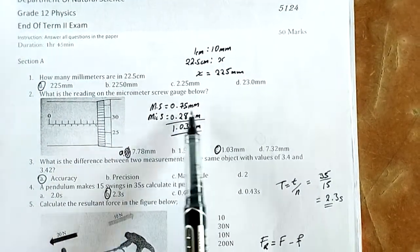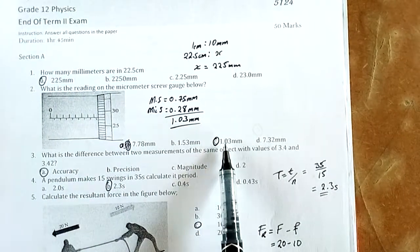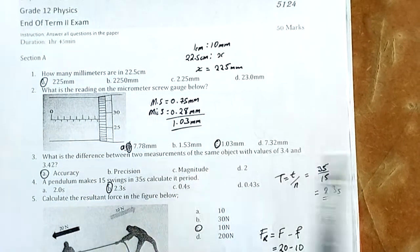Therefore, this is 0.28. When you add the two readings, your answer comes as 1.03 millimeters. That's our answer, C.